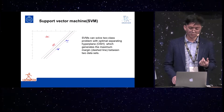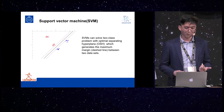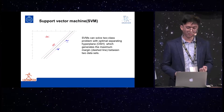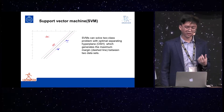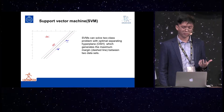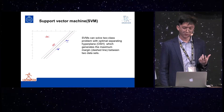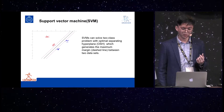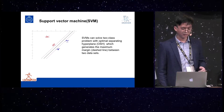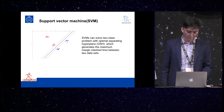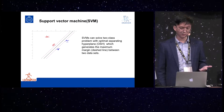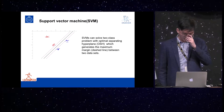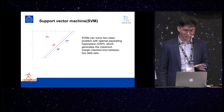I'm going to briefly introduce two popular machine learning algorithms. The first one is the support vector machine. Support vector machine can solve two-class problems with an optimal separating hyperplane, which generates the maximum margin between two datasets. In this figure, you can see the black line is the hyperplane, and the dashed lines represent the maximum margins.